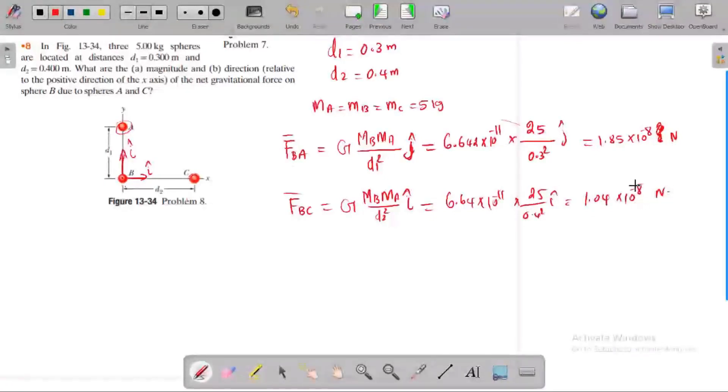Okay, we find out the force acting on B by A and force acting on B by C. We need to find the magnitude of the net gravitational force.